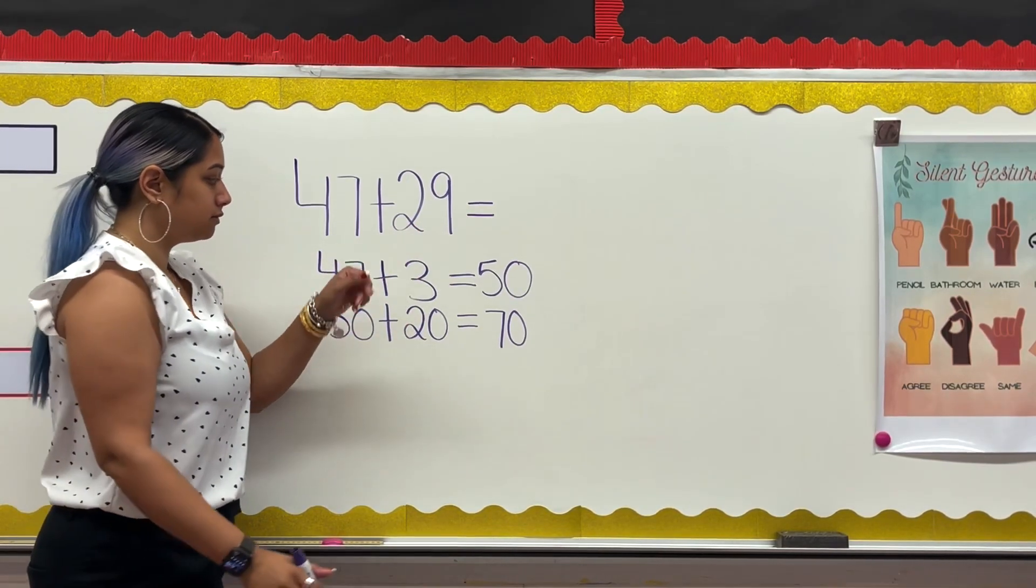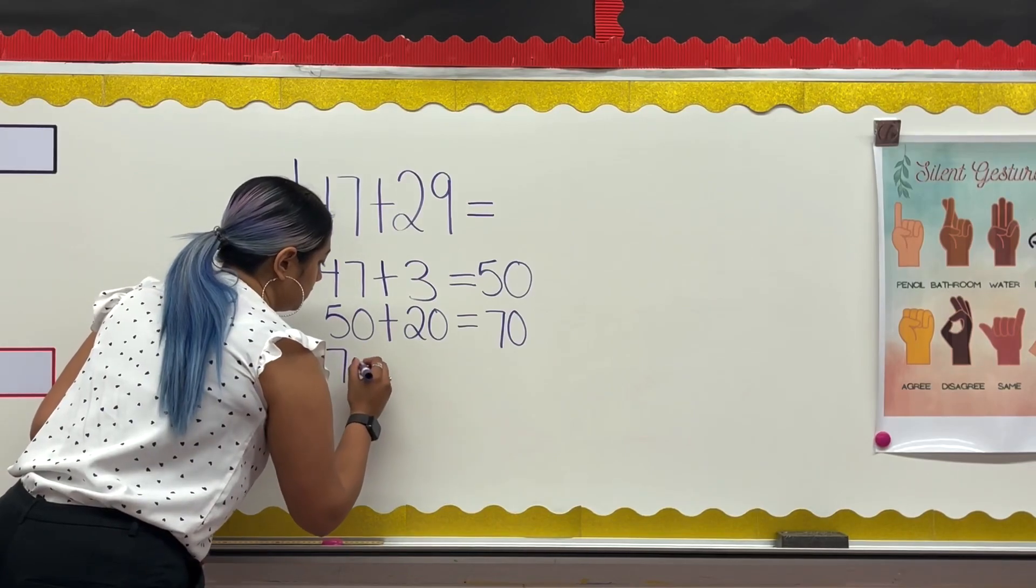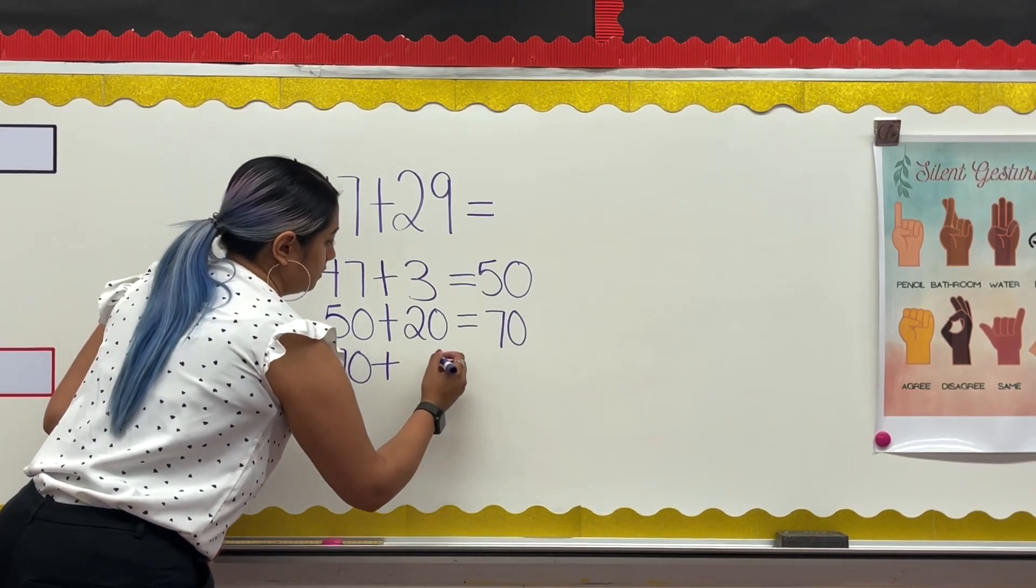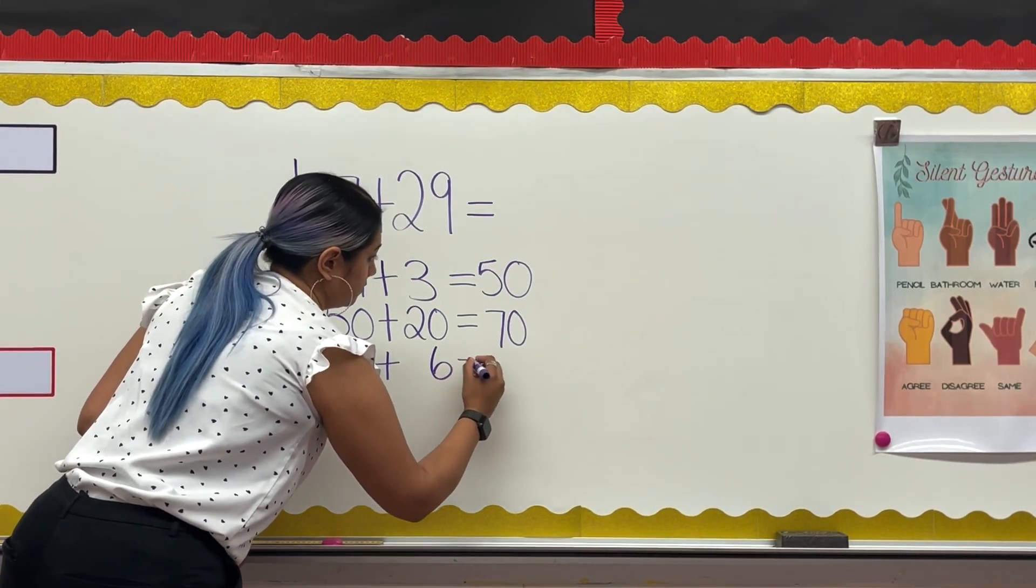This means I still need to add 6. Now I see the sum of 47 and 29 is 76.